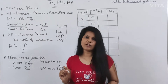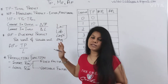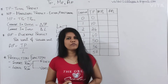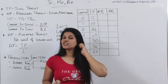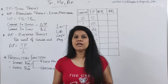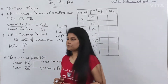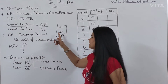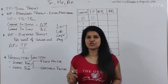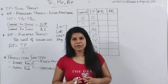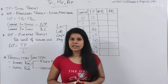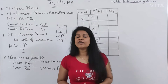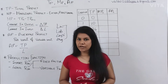Land, labour, capital, and organisation — without any one of these, if you leave even one factor, it is definitely impossible to produce. How are you going to use land, labour, capital, and organisation on the basis of the time period? If it is for the short run, how will I use the factors of production? If it is for the long run, how will we use the factors of production?